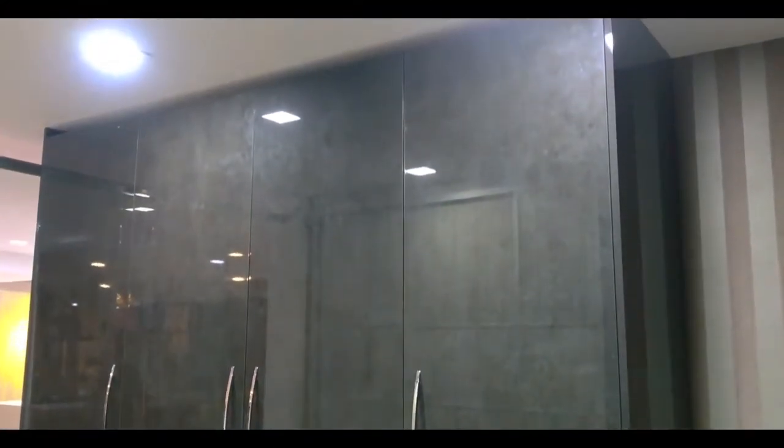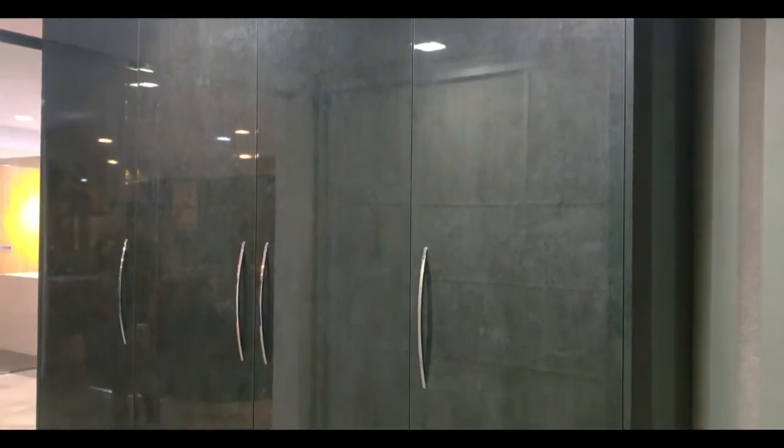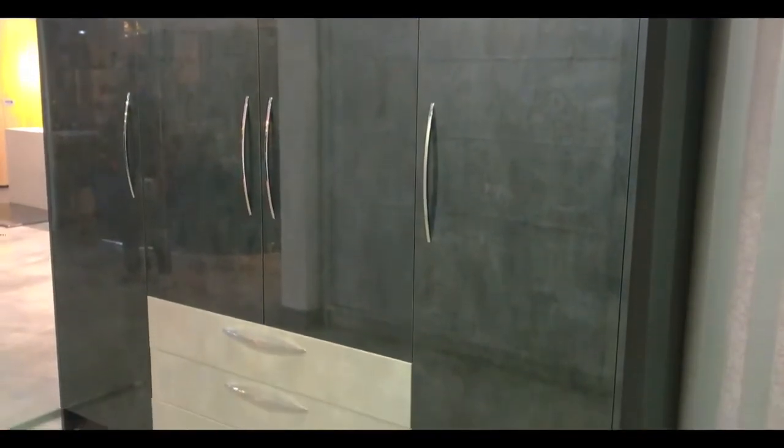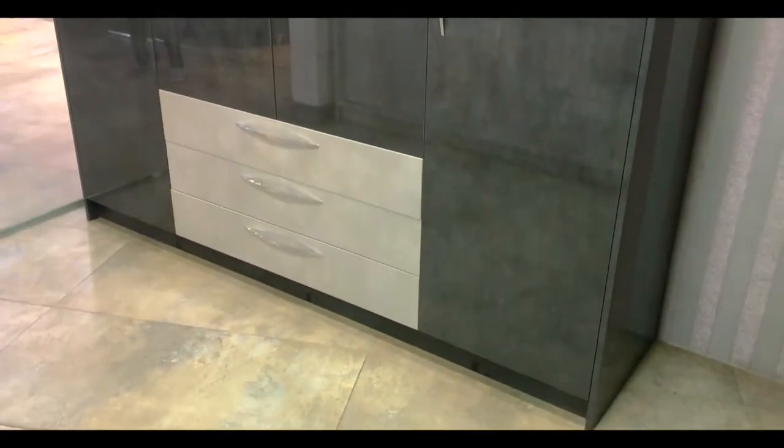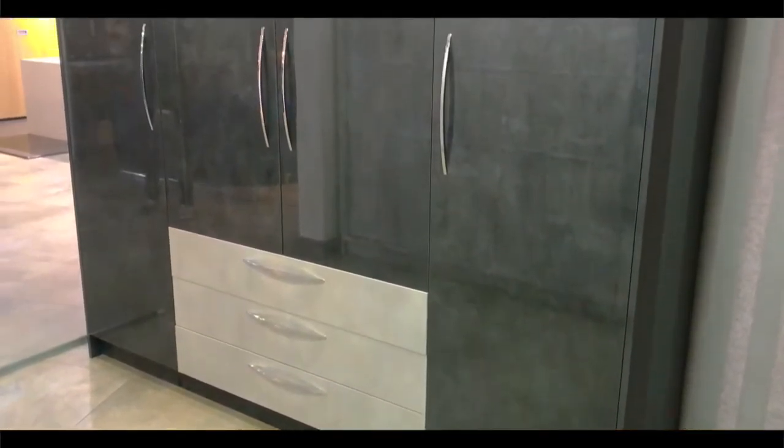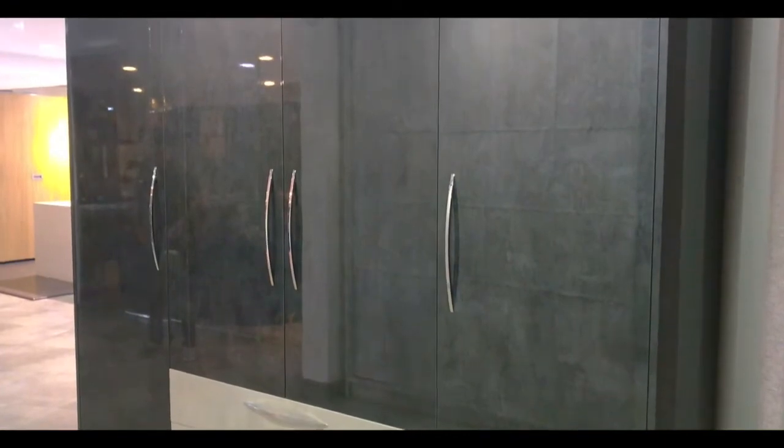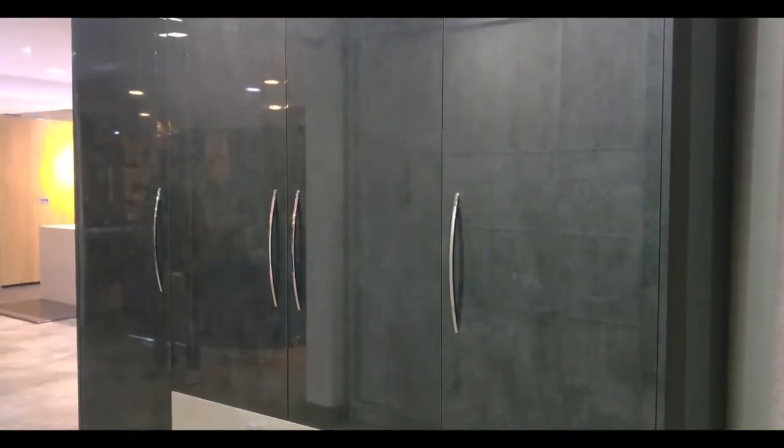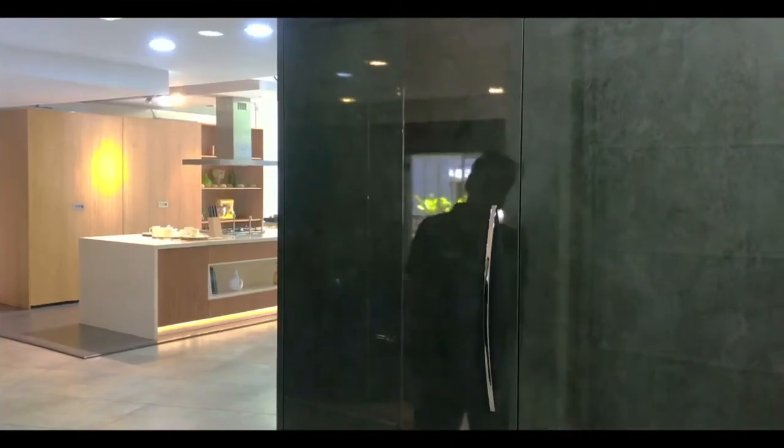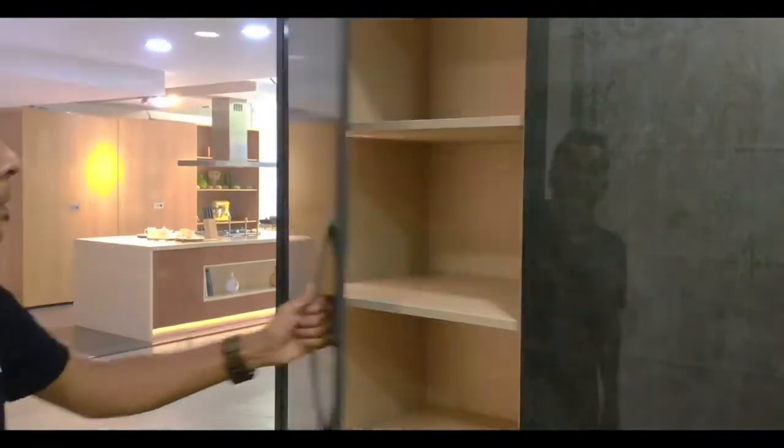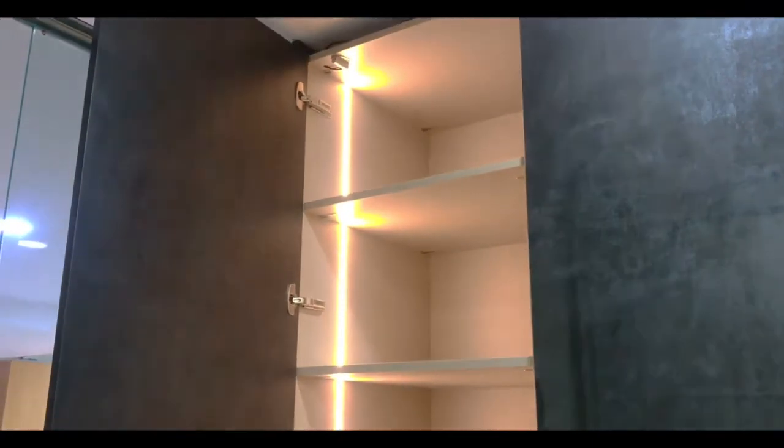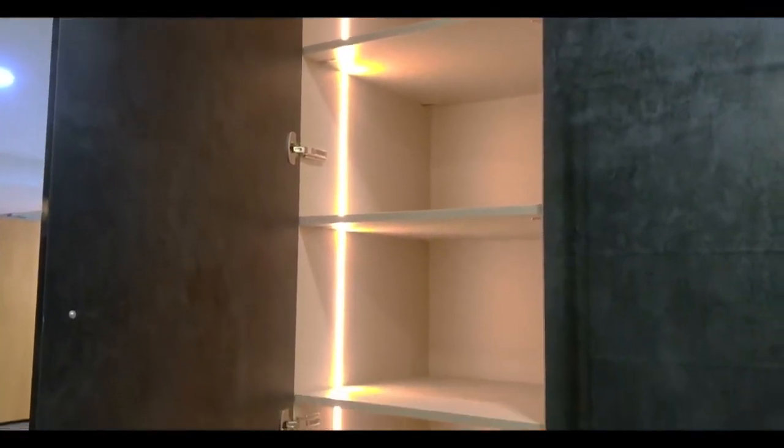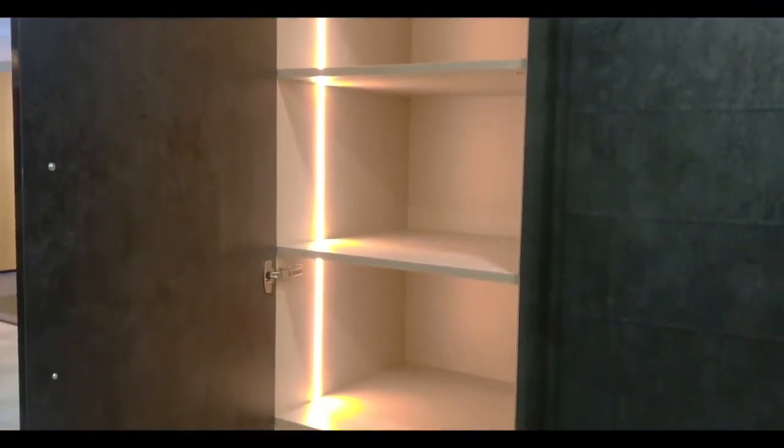The last wardrobe we have on display is the hinge wardrobe with a gloss, dark and light grey mix of polylac finishes. In this section of the wardrobe we have a fabric finish on the inside with adjustable shelves and we also have LED striped lights on the side.